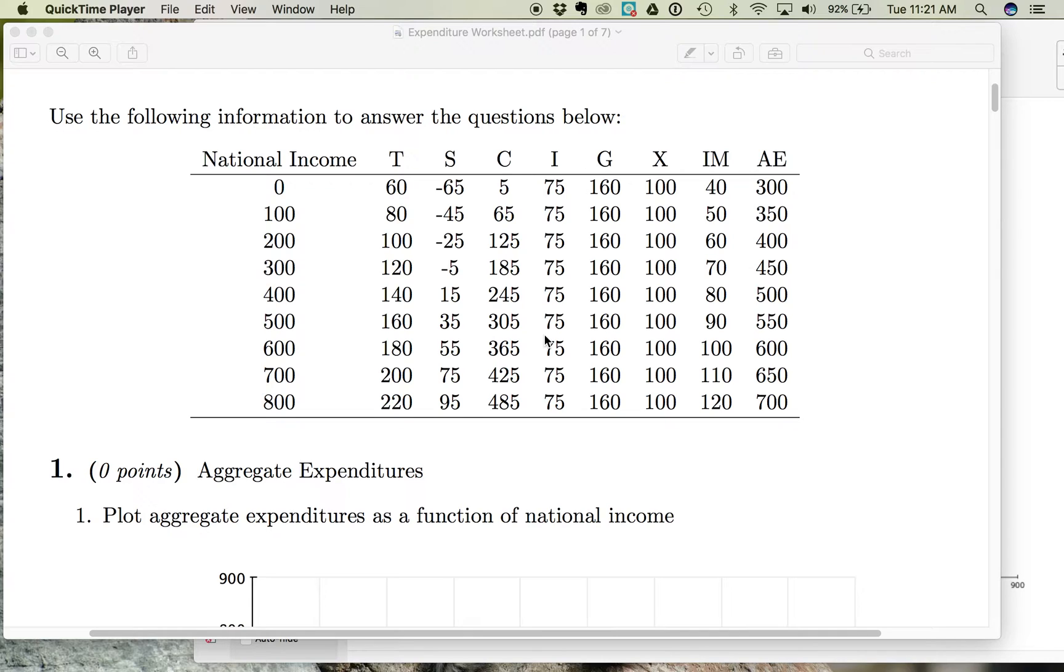Let's first look at exports and imports separately, and then we'll look at the net exports. So here we have an example, and here we have our exports and our imports, and here we have national income. So when national income is zero, exports are 100. When national income is 100, exports are 100.